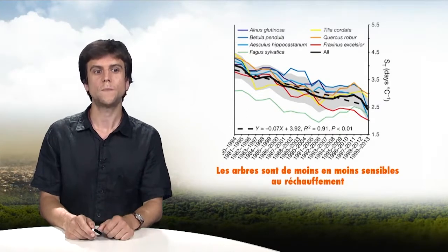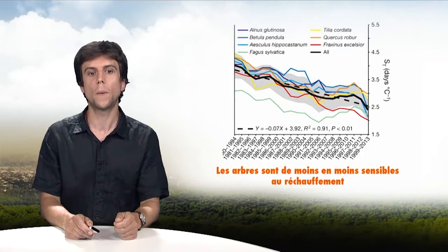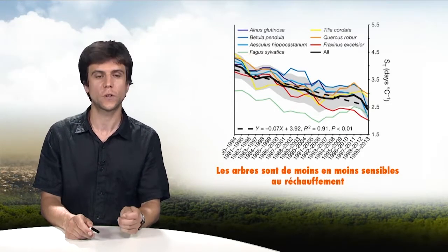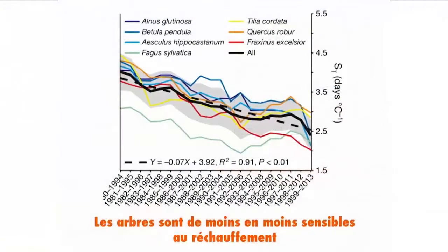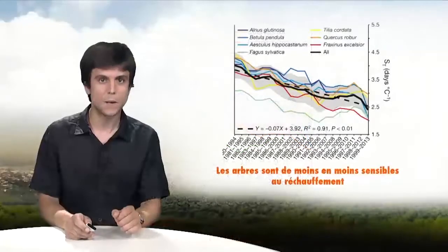Another interesting observation conducted recently showed that in the spring, trees answer less and less strongly to the increase of temperature. This is the number of days of earlier appearance of leaves for a one-degree change. In the 1980s, towards the left of the graph, a temperature warmer by one degree meant the leaves would appear four days earlier. Now the sensitivity of trees is only 2.5 days per degree, and it's observed across many species.